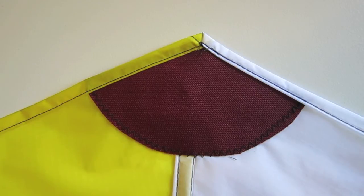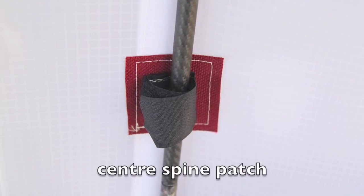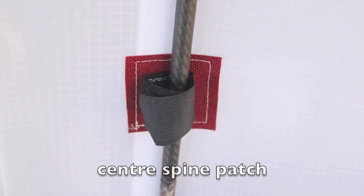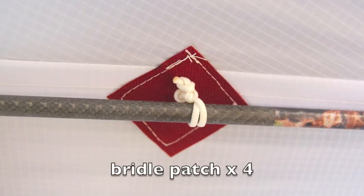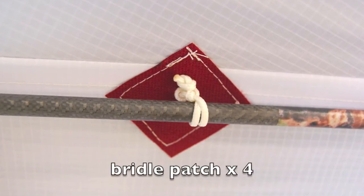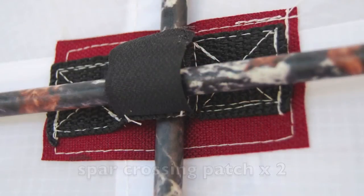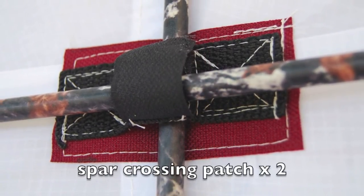We'll also need a patch in the center of the kite to steady the spine, four patches for where the bridles pass through the kite, and two patches for the spar and spine crossover points.